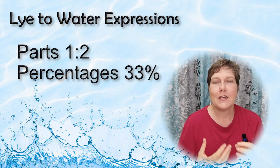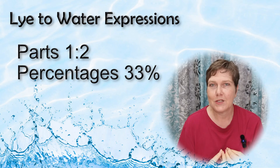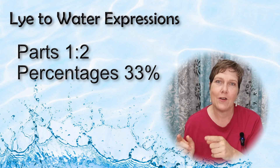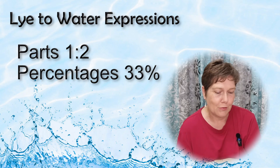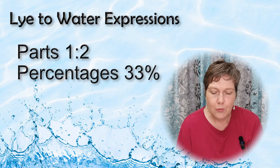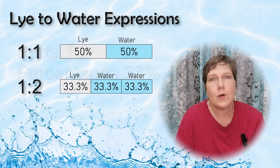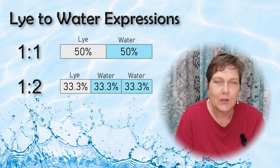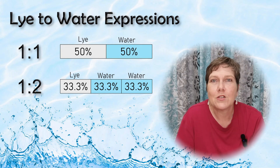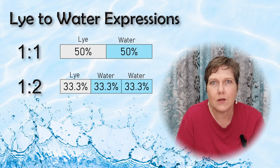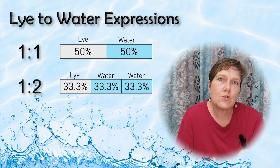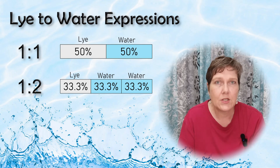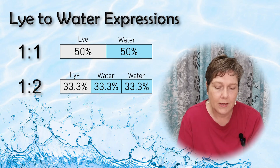So 33% actually means more water than 50%, because we're looking at the lye portion, not the water portion - that can be a bit confusing. For beginners, a one-to-two ratio, or 33%, is a very good place to start. Most recipes come out pretty good with a one-to-two lye-to-water ratio. If you struggle with soda ash or glycerin rivers we'll look at those - but for beginners, a one-to-two ratio is good for cold process soap making.